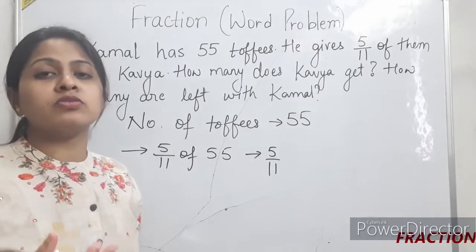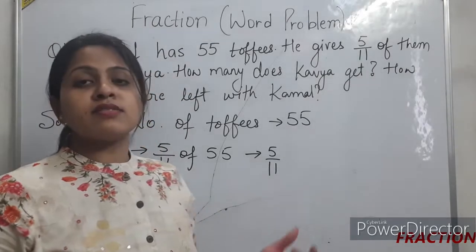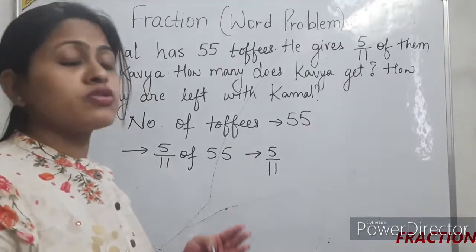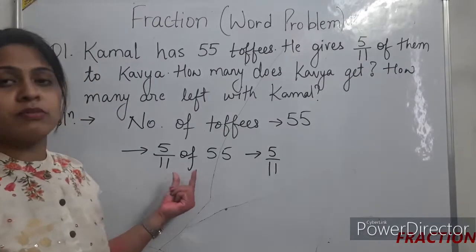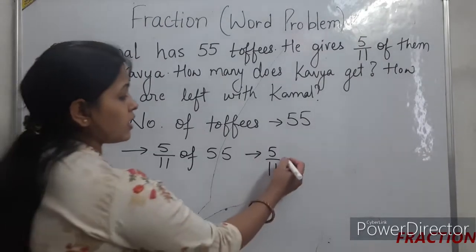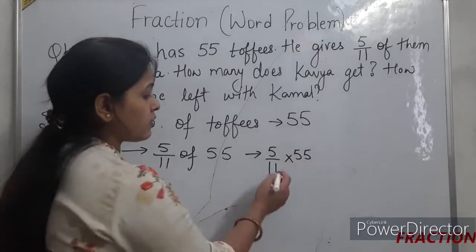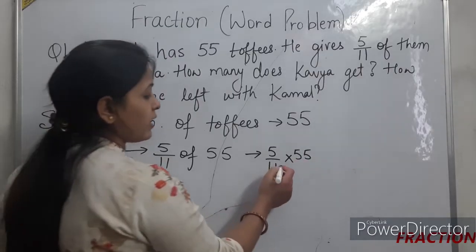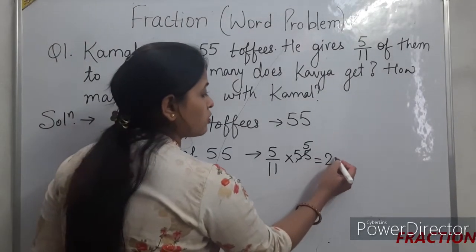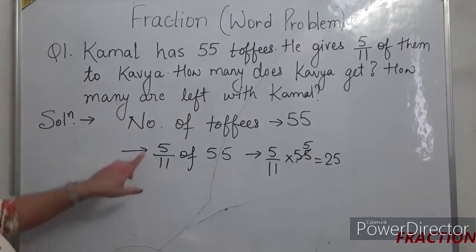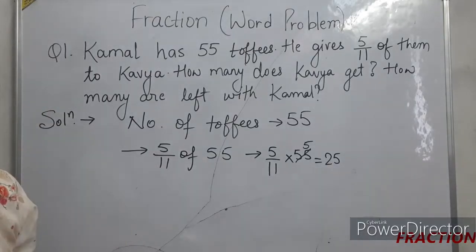We will do the multiplication of the fraction, as we have learnt in previous videos. So we calculate 5 by 11 into 55. When we divide 55 by 11 it gives us 5, and 5 into 5 is equal to 25. So the number of toffees Kamal has given to Kavya is 25.